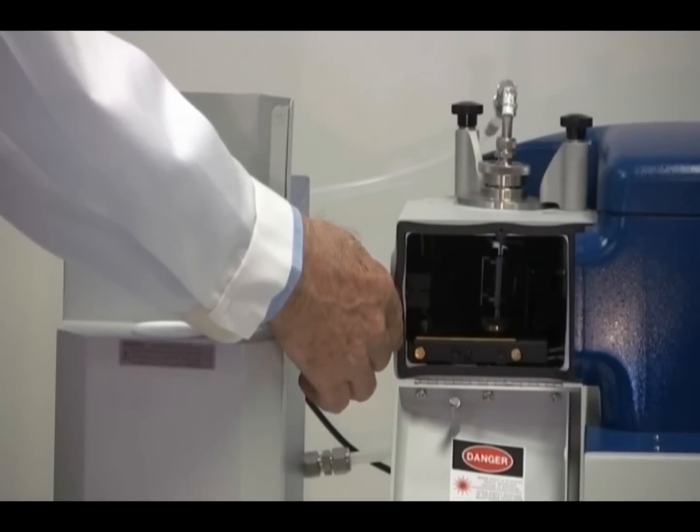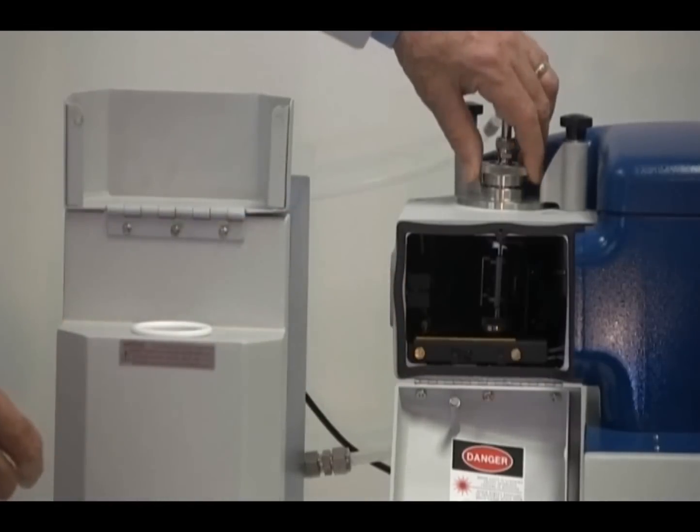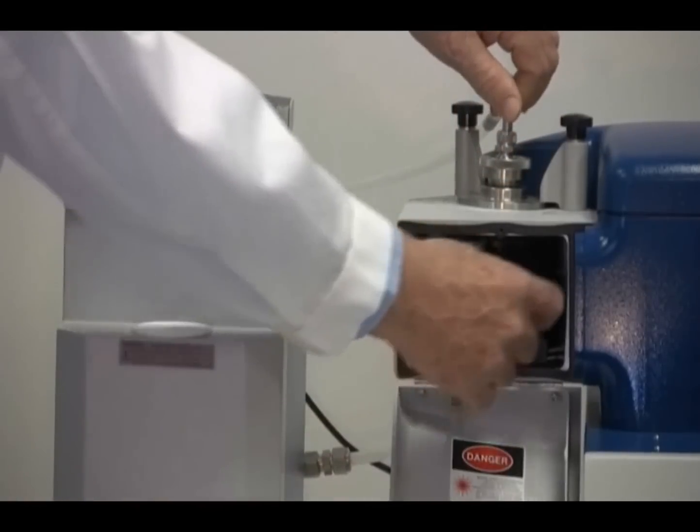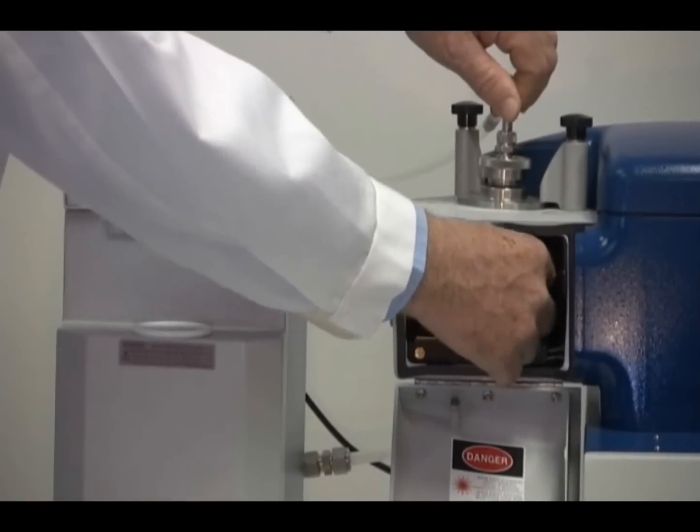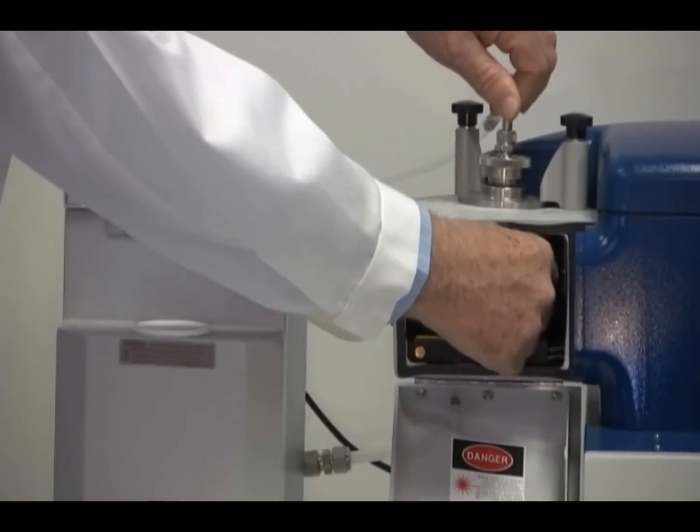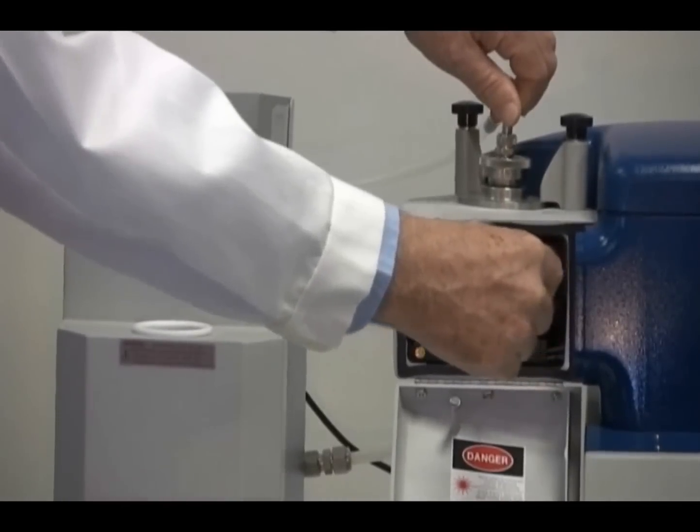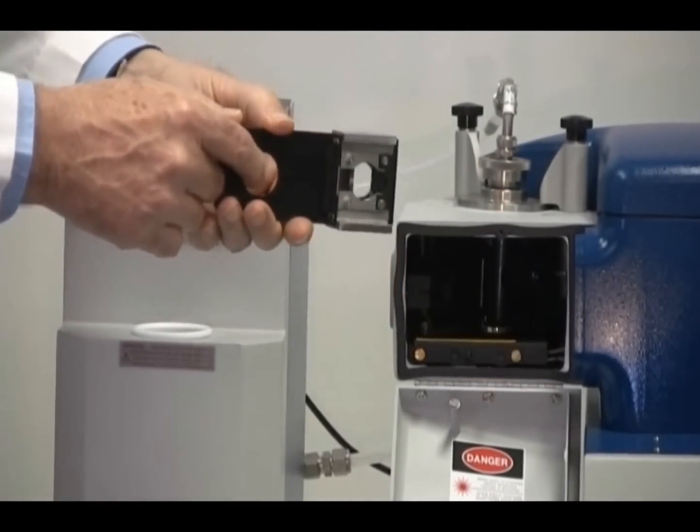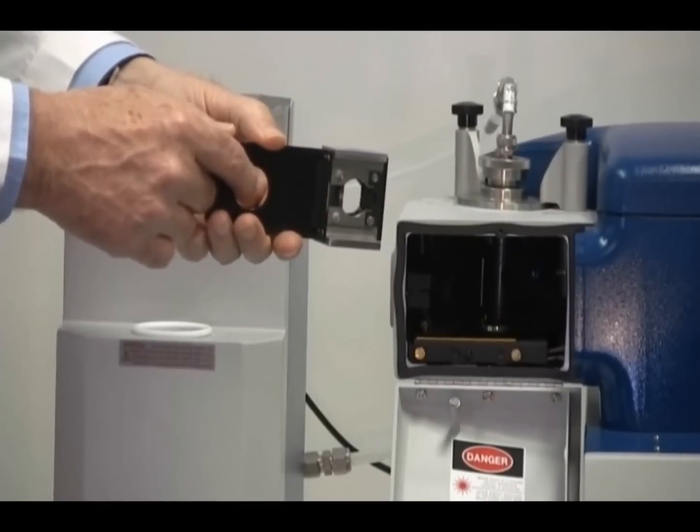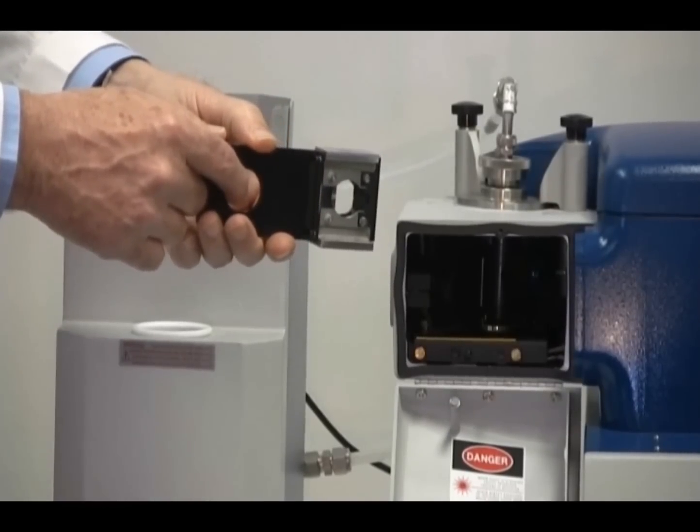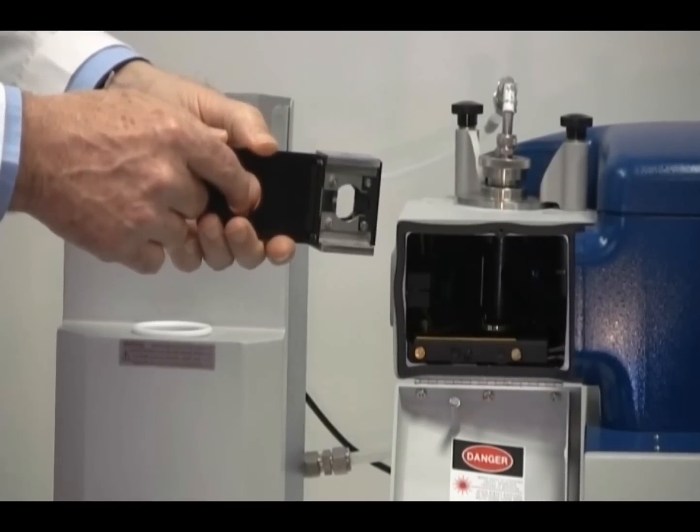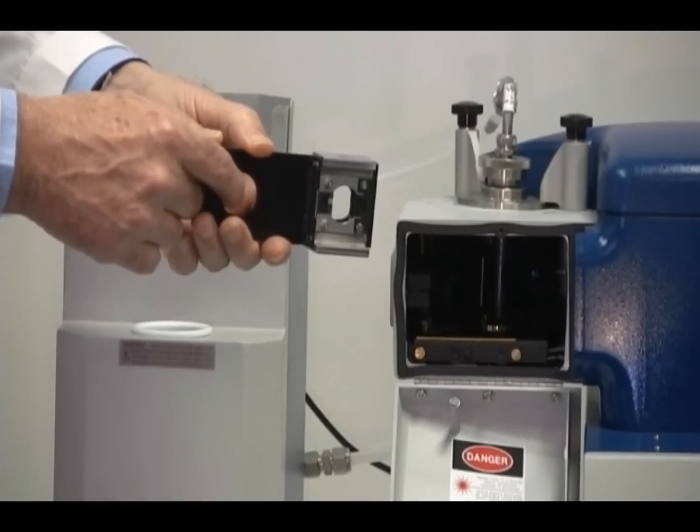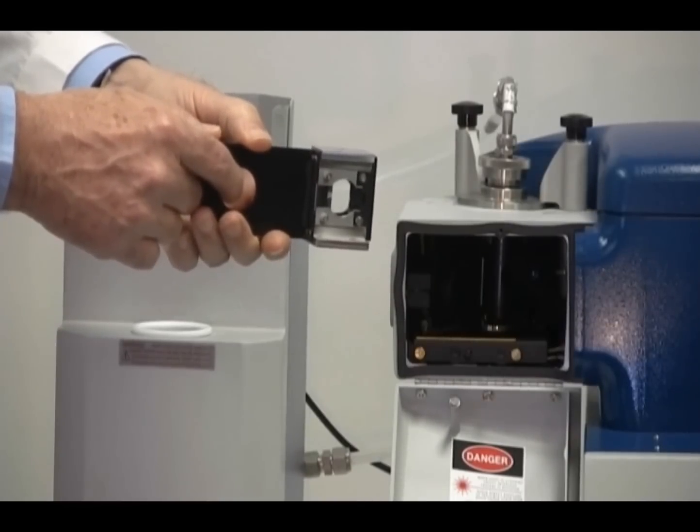To remove the sample cell, merely turn the knurled nut at the top counter-clockwise and lift up on the tubing. Grasp the cell holder by the handle and withdraw the sample cell. This is the sample cell that I will be cleaning. Unlike other manufacturers, there is no requirement to disassemble the cell to clean it. In fact, to do so would raise other problems, so make it a rule not to disassemble the sample cell.